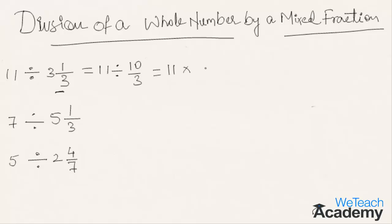Now, this equals 11 multiplied by the reciprocal of 10 by 3, that is 3 by 10. So, 3 3's are 33 by 10. Hence, 33 by 10 is the result of 11 divided by 3 and 1 by 3.